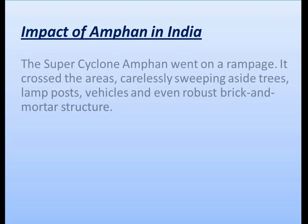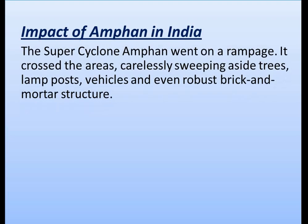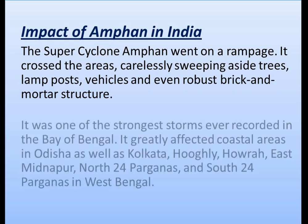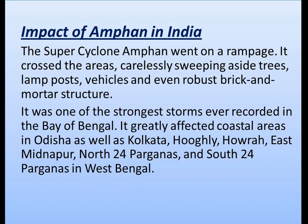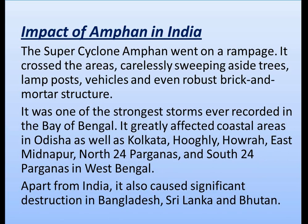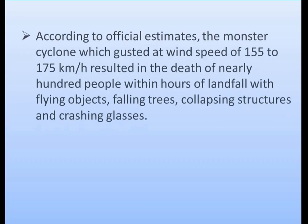The super cyclone Amphan went on a rampage, sweeping aside trees, lampposts, vehicles, and even robust brick-and-mortar structures. It was one of the strongest storms ever recorded in the Bay of Bengal. It greatly affected coastal areas in Odisha, as well as Kolkata, Hooghly, Howrah, East Midnapore, North 24 Parganas, and South 24 Parganas in West Bengal. Apart from India, it also caused significant destruction in Bangladesh, Sri Lanka, and Bhutan.